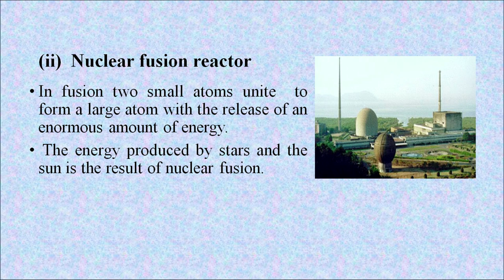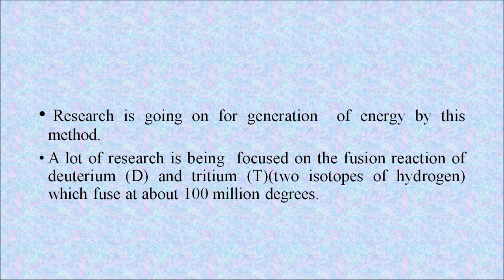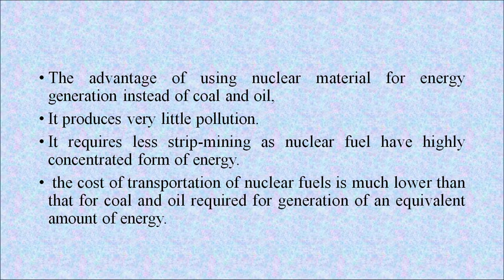In nuclear fusion, two small atoms unite to form a large atom with the release of an enormous amount of energy. The energy produced by stars and the sun is the result of nuclear fusion. A lot of research is being focused on the fusion reaction of deuterium and tritium, the two isotopes of hydrogen, which fuse at about 100 million degrees. The advantage of using nuclear material for energy generation instead of coal and oil is that it produces very little pollution, requires less strip mining, and the cost of transportation of nuclear fuel is much lower than for coal and oil.